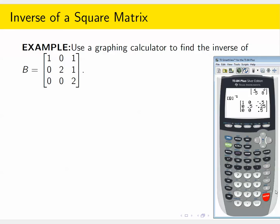This is the inverse of the matrix we started with. 1, 0, negative 0.5, 0, 0.5, negative 0.25, 0, 0.5.